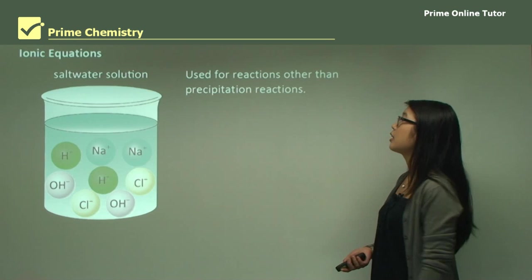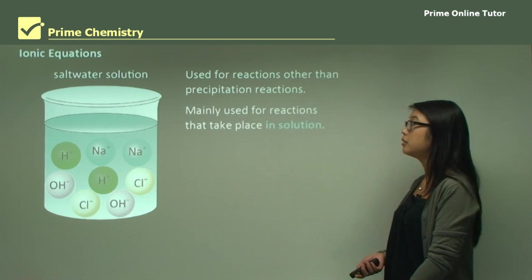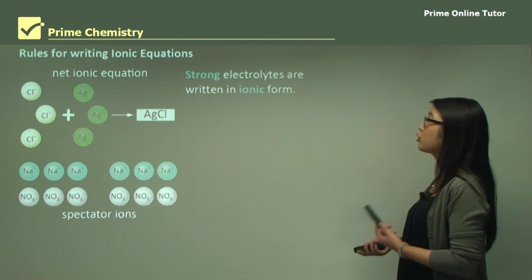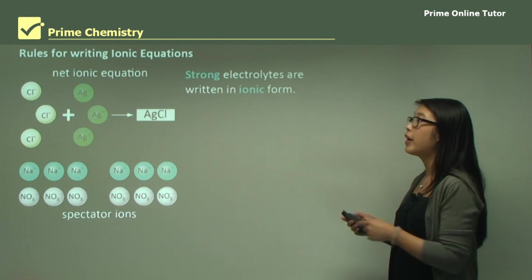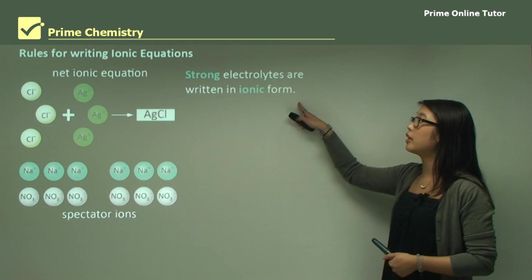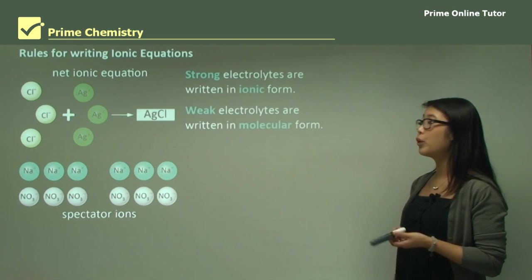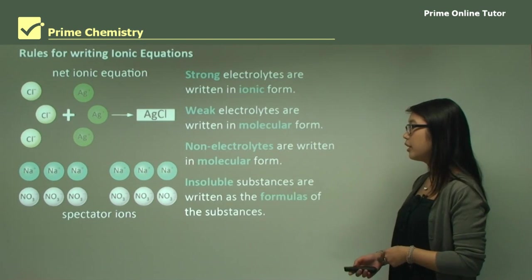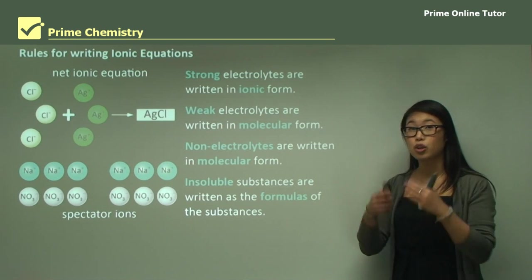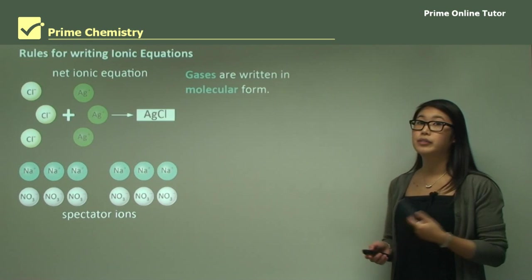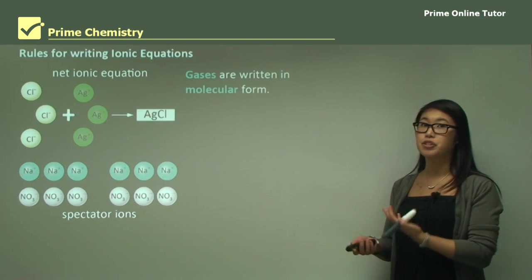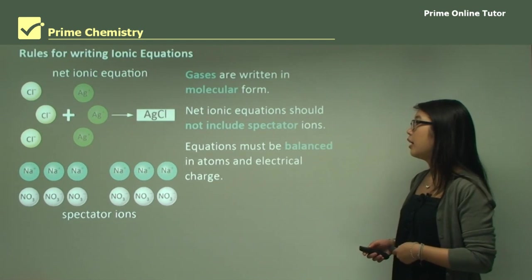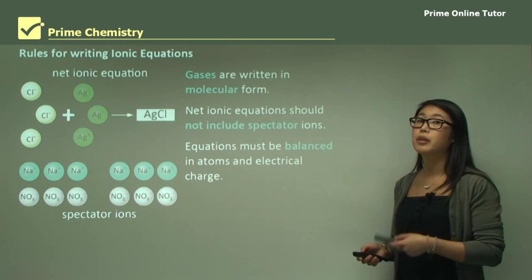Ionic equations are used for reactions other than precipitation reactions, mainly for reactions taking place in solution — in water or another solvent. When writing ionic equations, follow these rules: strong electrolytes are written in ionic form; weak ones in molecular form; non-electrolytes are always written in molecular form; insoluble substances are written as the full formula; gases are always written in molecular form. Net ionic equations don't include spectator ions, and equations must be balanced for both atoms and electrical charge.